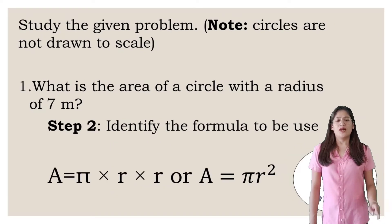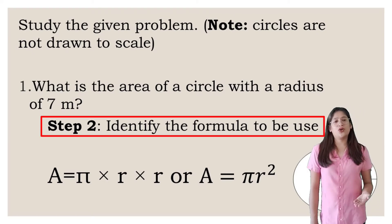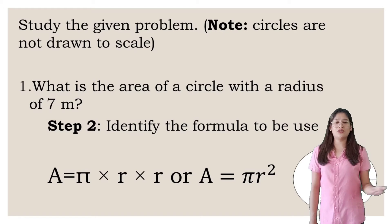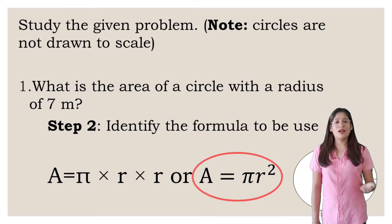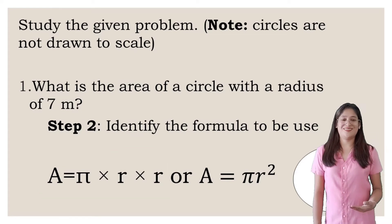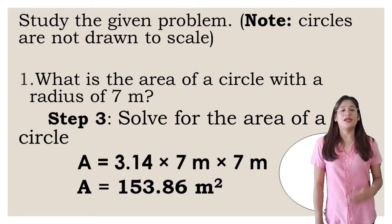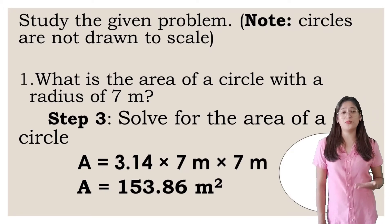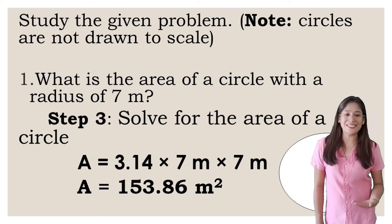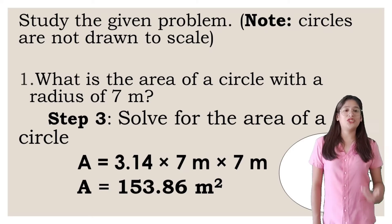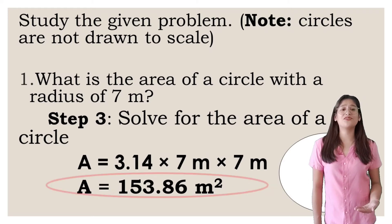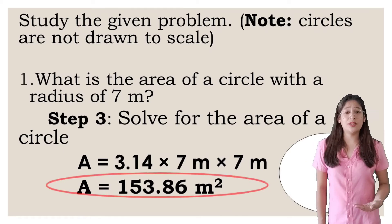Step 2: we will identify the formula to be used. Kung saan kayo mas natatalian, yun yung gagamiting formula. It's either area equals pi r squared or area equals pi times r times r. Step 3: solve the area of the circle. Now we will solve the area of a circle. Area is equals to 3.14, multiplied by 7 meters, and then multiplied again by 7 meters. The area is equals to 153.86 meters squared.